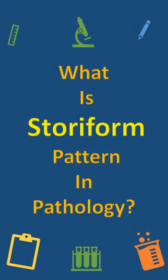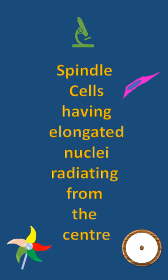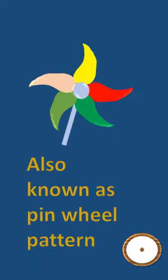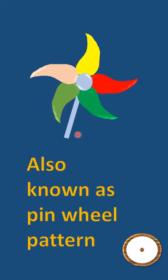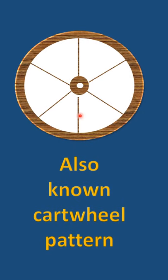What do we mean by storiform pattern? The spindle cells with elongated nuclei, when they radiate out from a center point, they form this pattern which is called the storiform pattern. It has got a center point and these spokes — they are like the spindle cells which are radiating outwards — also known as the cartwheel pattern.